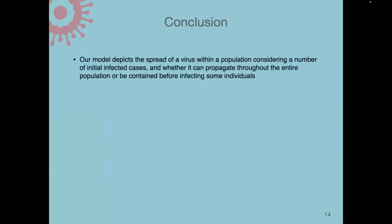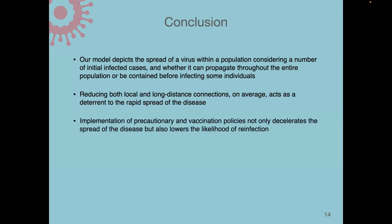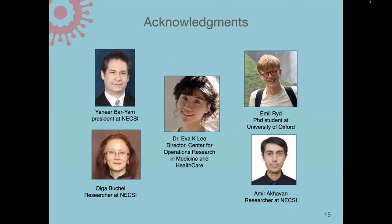In conclusion, our model depicts the spread of the virus within a population, considering initial infected cases and whether it can propagate through the entire population or be contained. Reducing both local and long-distance connections acts as a deterrent to the rapid spread of the disease. Implementation of precautionary and vaccination policies not only decelerates the spread but also lowers the likelihood of reinfection. This work is still in progress and we expect more results in the future. I want to acknowledge my colleagues in this work — thank you for listening.